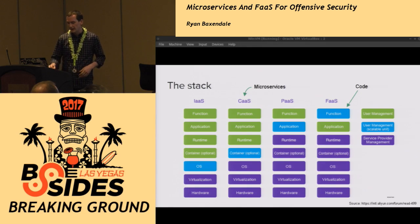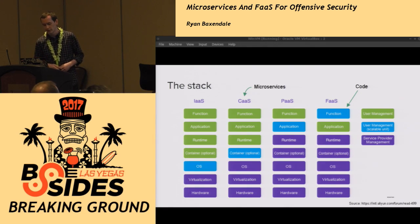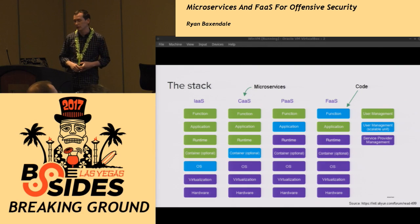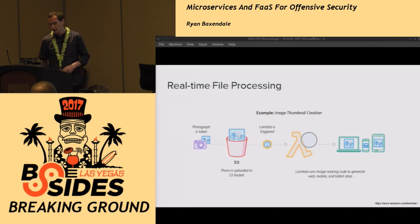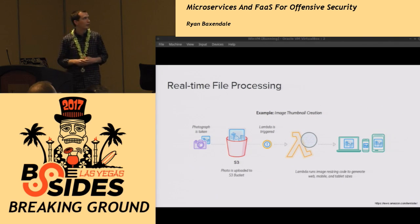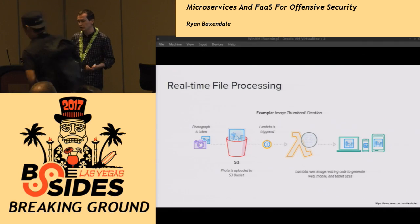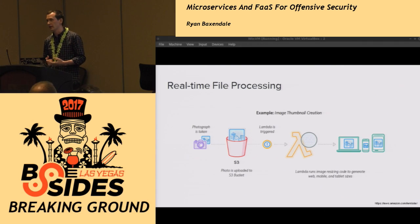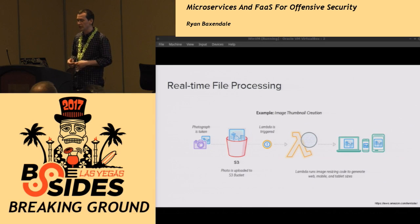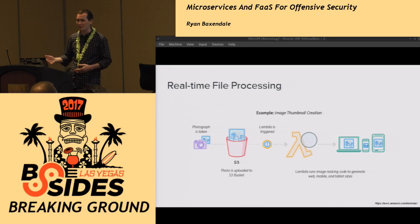If we look at the stack, Functions as a Service is on the far right. You just put your code in there and then the interpreter such as Python and Node.js, and everything down from the stack is all managed by the service provider. One very simple example always given by Lambda is: you have a photograph taken by some users, they upload to an S3 bucket, that triggers a Lambda function, which will maybe add some filter to your photograph and then upload that back to the user.